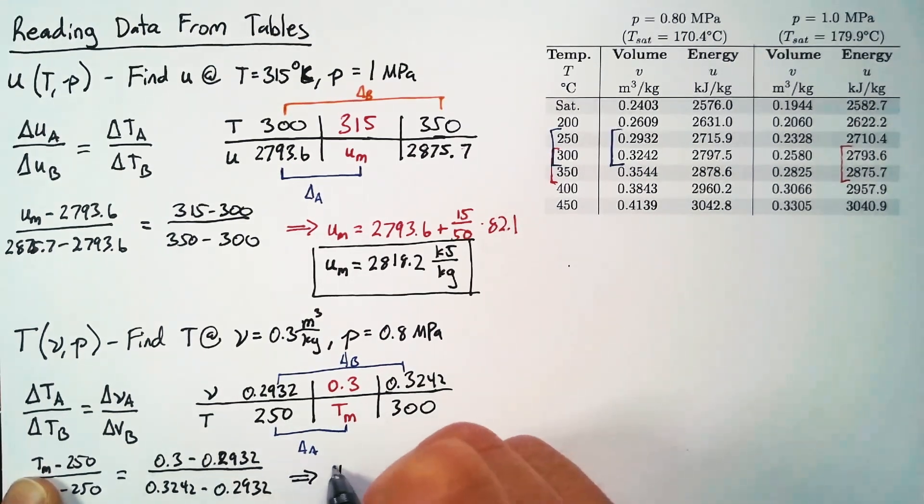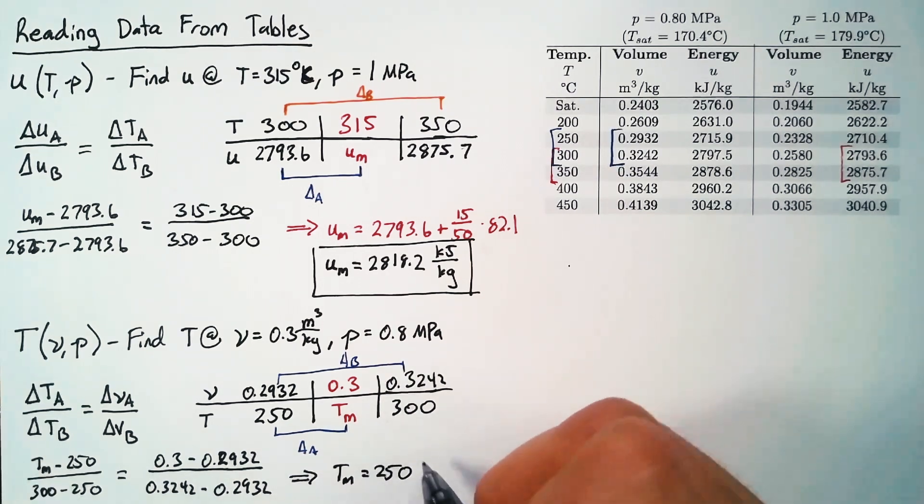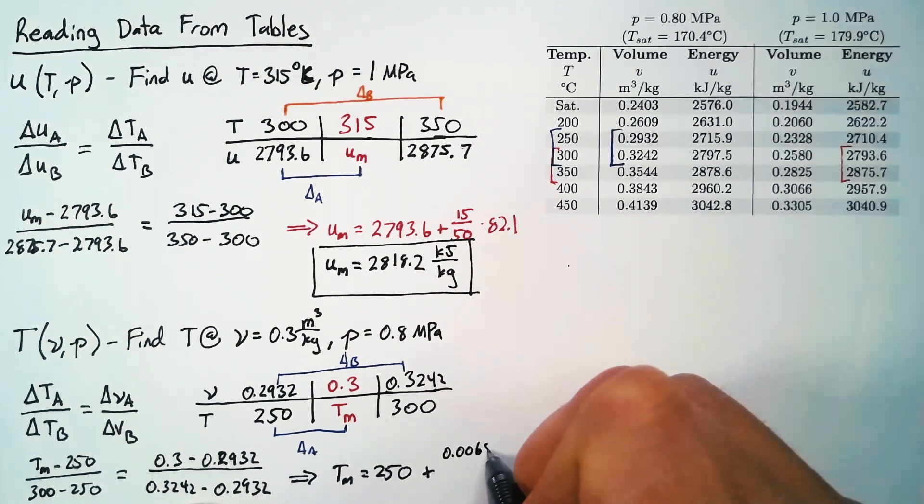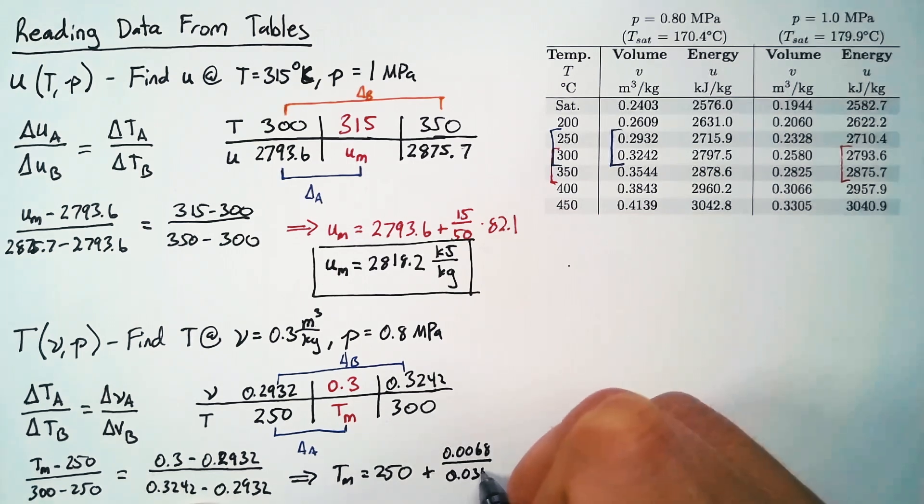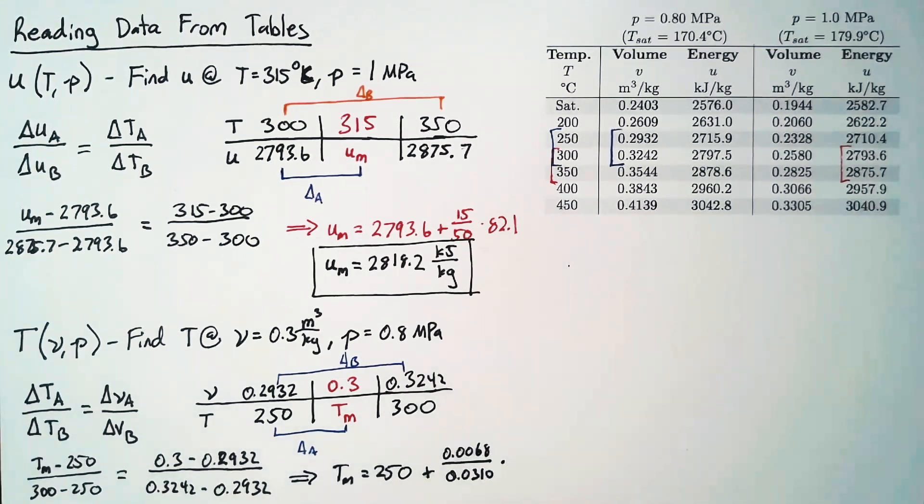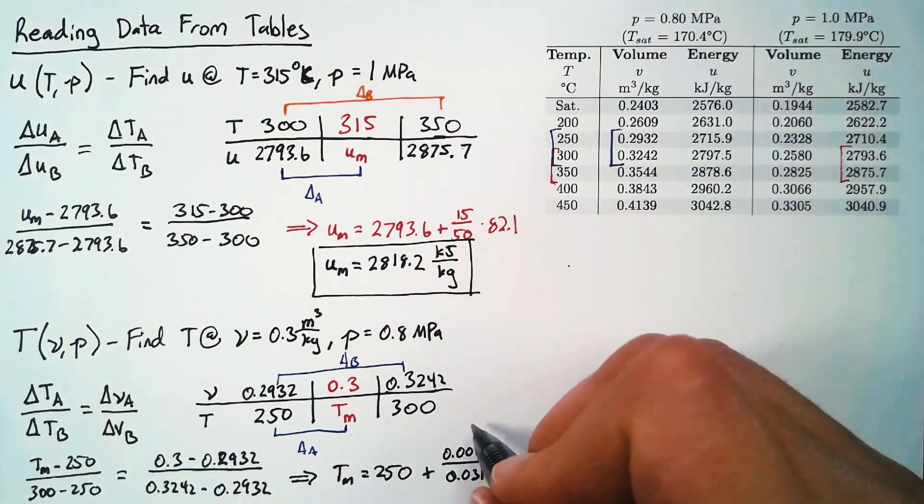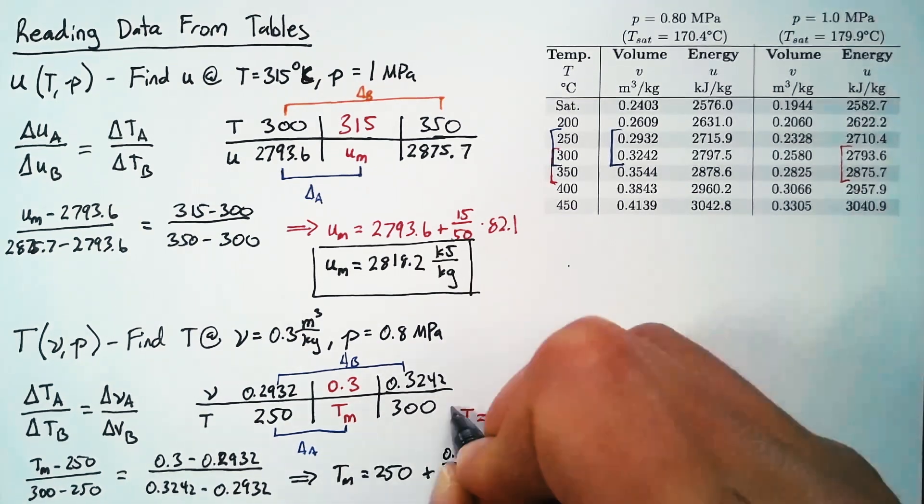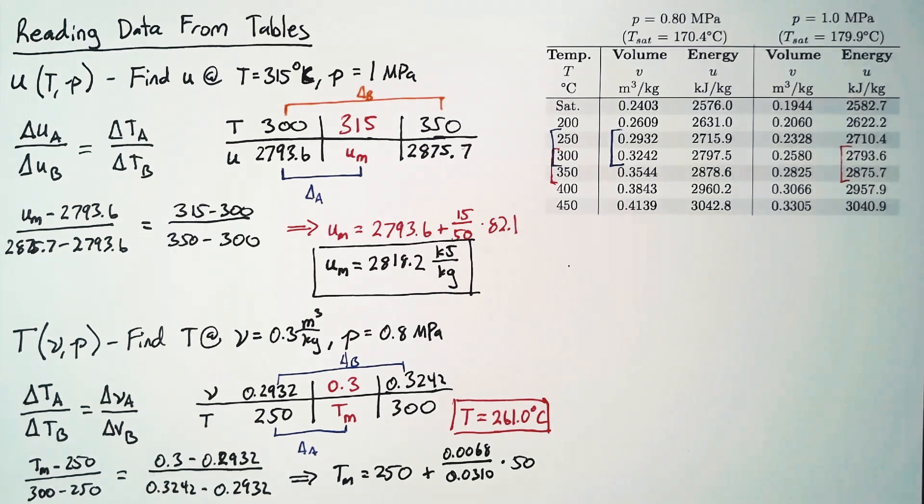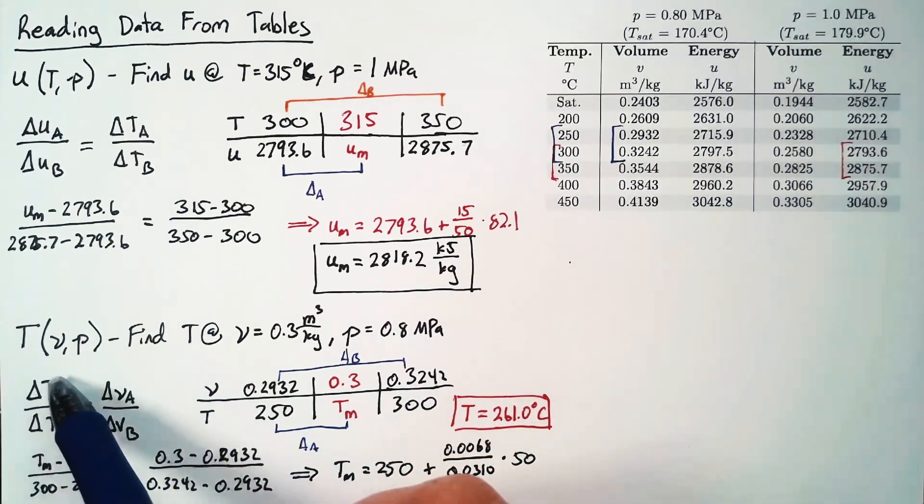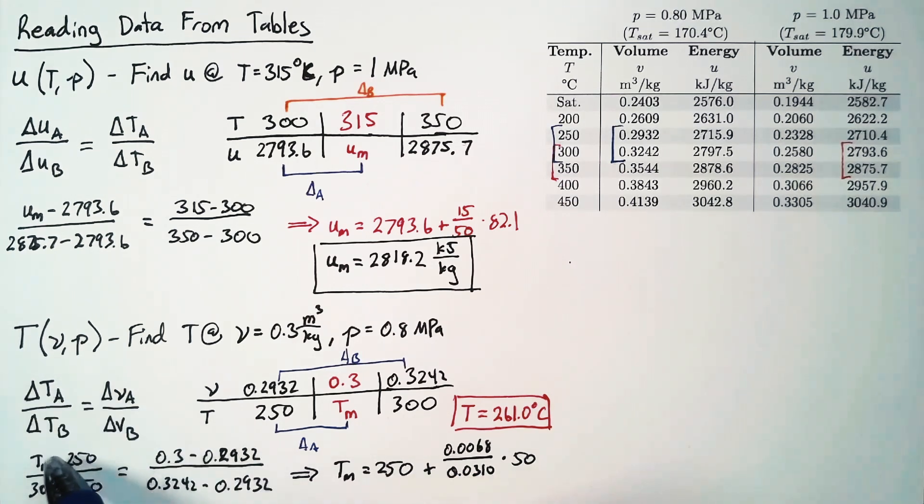Our equation is (Tm - 250)/(300 - 250) = (0.3 - 0.2932)/(0.3242 - 0.2932). Solving gives Tm = 250 + (0.0068/0.0310) × 50 = 261.0 degrees Celsius. The important thing to recognize is that we want the known values on the top row and right-hand side, and the value we're looking for should be in the upper left, which makes the equation easiest to solve.